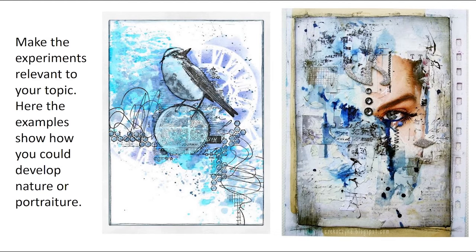Here are some examples of mixed media work and mark making relevant to topics you've picked. We've got a bird looking at nature, and references with hexagons in the background - honeycombs and bees - so you can explore different shapes from nature in layers of mark making. On the right we've got collage, mark making, painting, and photography worked into with text used in an abstract way. If you're looking at portraiture, think about taking part of your drawing and developing it with different mark making and mixed media.